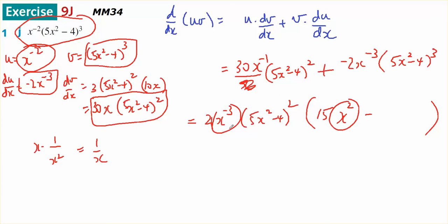Minus, the 2 is gone, the x to the negative 3 is gone, that leaves me with 5x squared minus 4 to the power of 1. And inside the bracket there, I've got 15x squared minus 5x squared minus minus plus 4.